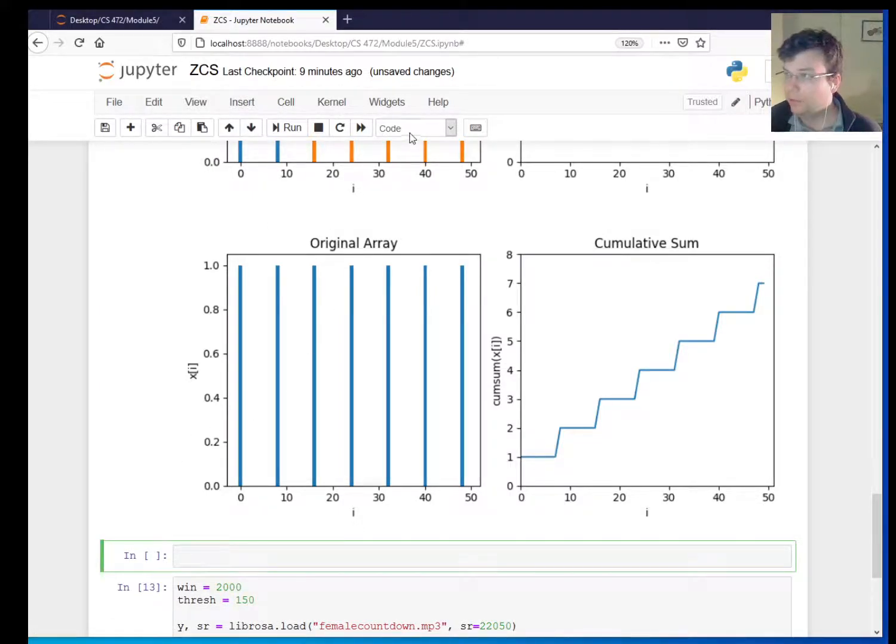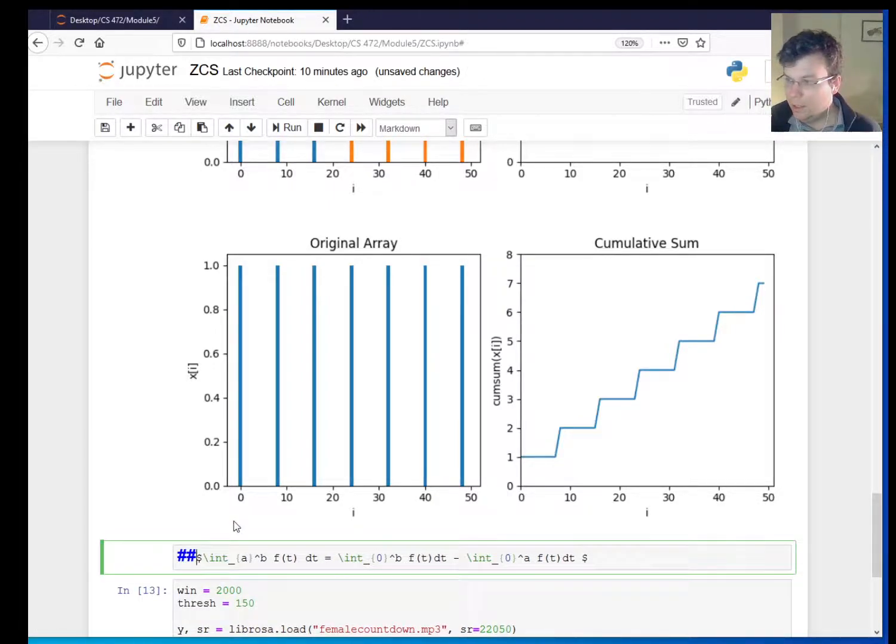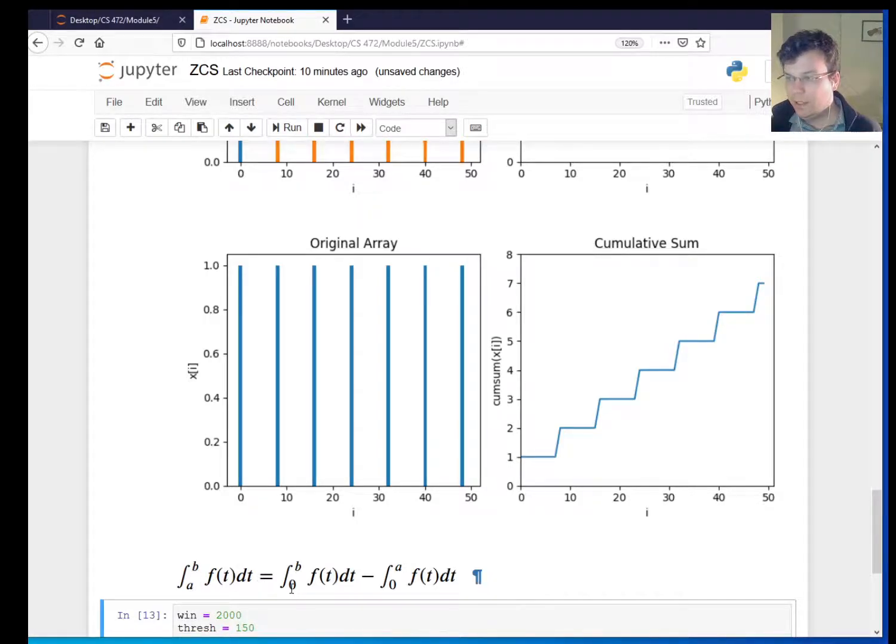But I can actually use the cumulative sum to tell me that as well. Because what I can do is look at the cumulative sum at 30, which I see is 4. Look at the cumulative sum at 10, which is 2. And 4 minus 2 is going to give me the amount of spikes that there were there. If I look at what I've seen up to so far, up to 10, and then I look to what I've seen up to 30, the difference should be what happened in between. So this is analogous to the fact that you have in calculus, where the definite integral from a to b equals the definite integral from 0 to b minus the definite integral from 0 to a.